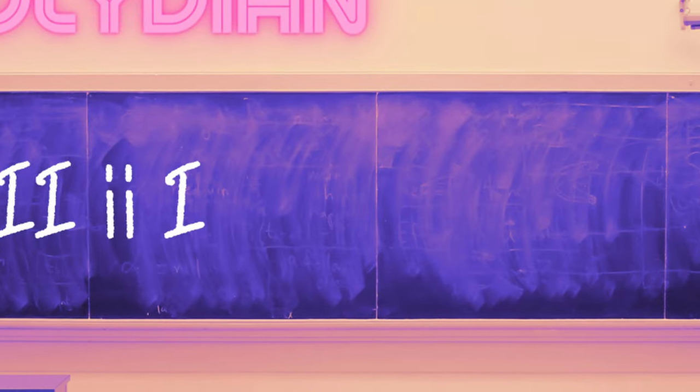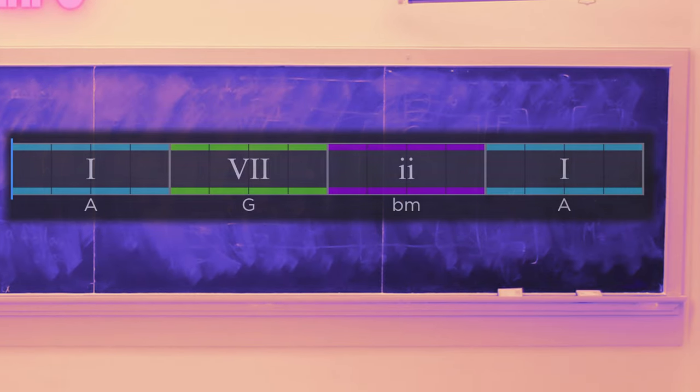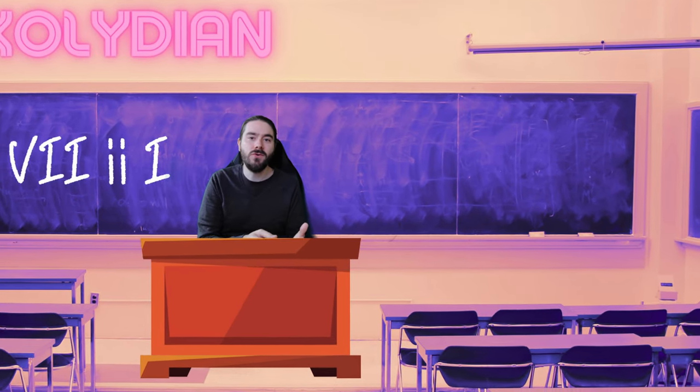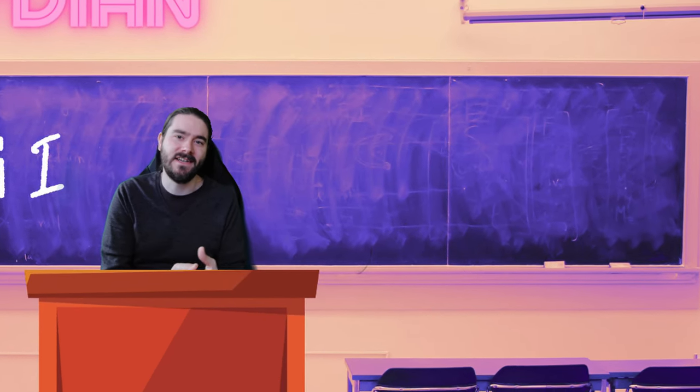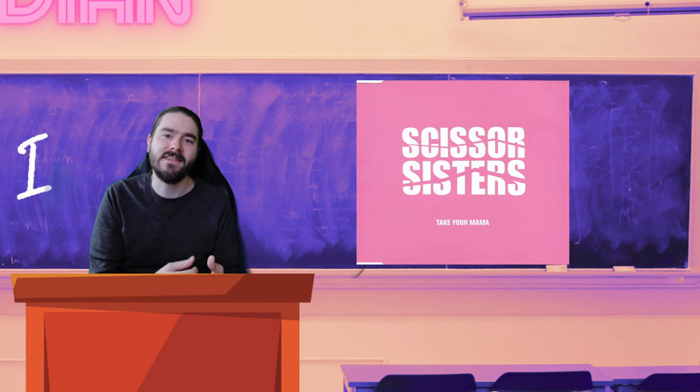Now we'll explore 1-7-2-1. As with the previous example, the 2 chord here provides a minor edge to proceedings. Examples include Take It or Leave It by The Strokes and Take Your Mama by Scissor Sisters.